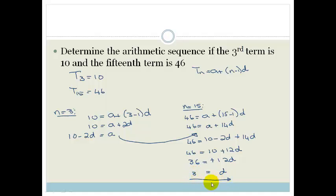Awesome. So now I have the common difference. And now I can substitute this d back into either this one or this one. This one looks easier. So I'm going to substitute the d back into that one. And I'm going to go 10 - 2 times by 3 = a. Therefore, we've got 10 - 6 = a. And therefore, a equals 4. Awesome.